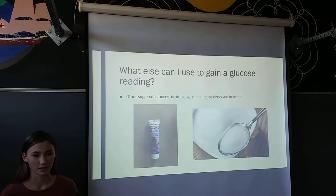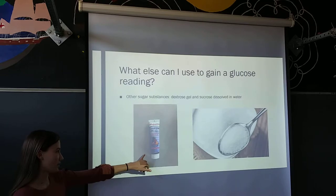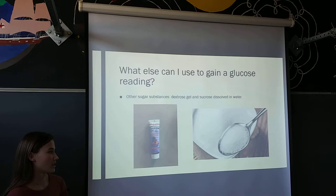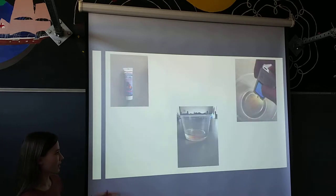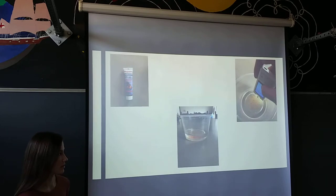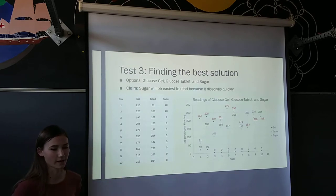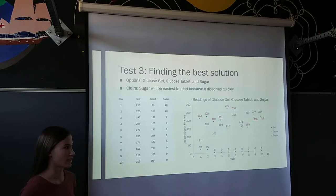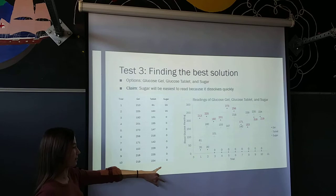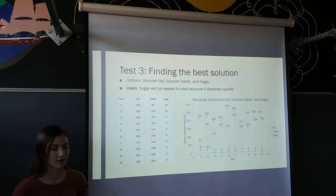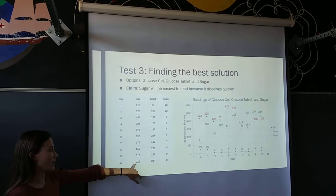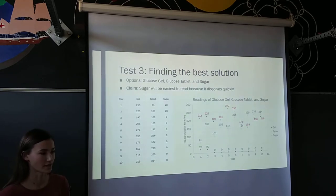I thought about what other substances I could use to get an accurate glucose reading. I also had glucose gel and plain sucrose, and dissolved both of them in water. I put five milliliters of the glucose gel in and tested it with the same glucose meter. I did the tablet again just to get a comparison, to see each substance's range of readings and determine which was more accurate. My claim was that sugar would be the most accurate because it's the easiest to dissolve, however it wasn't even picking up a reading on the glucose meter — telling me I would need a lot more sugar to register on the monitor. The glucose gel, shown in red, had the smallest range, so I used that for further testing.